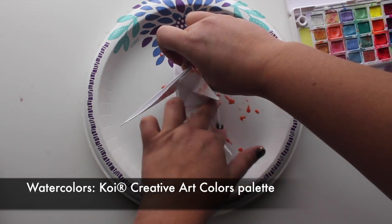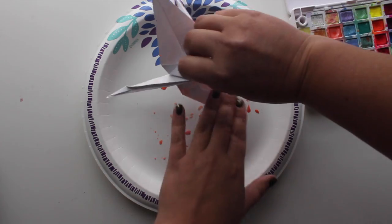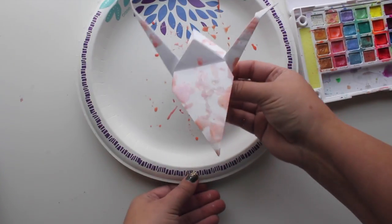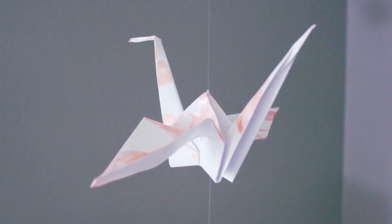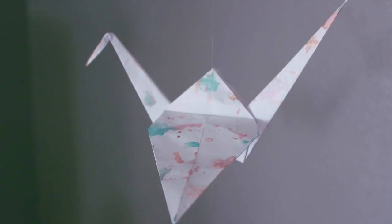I really like the Koi Creative Art Colors palette because it has pearlescent and metallic hues that shimmer, just like the stripes I made with the Permapick markers. You can achieve different effects based on the amount of paint and water you use, so have fun playing around with it. These look so beautiful when they catch the light.